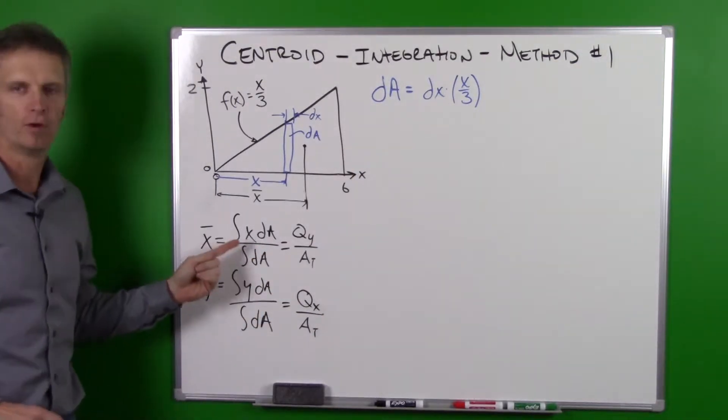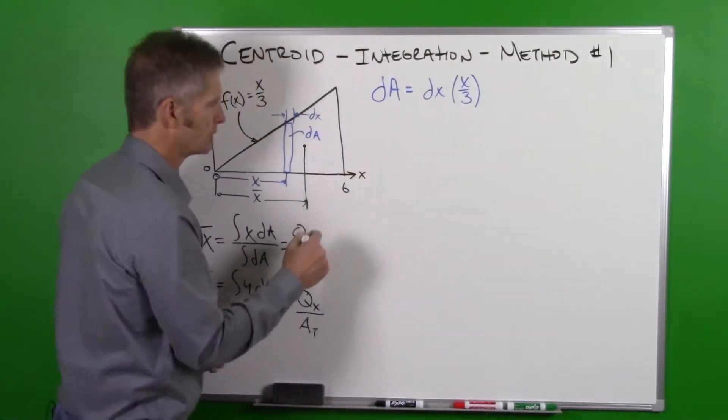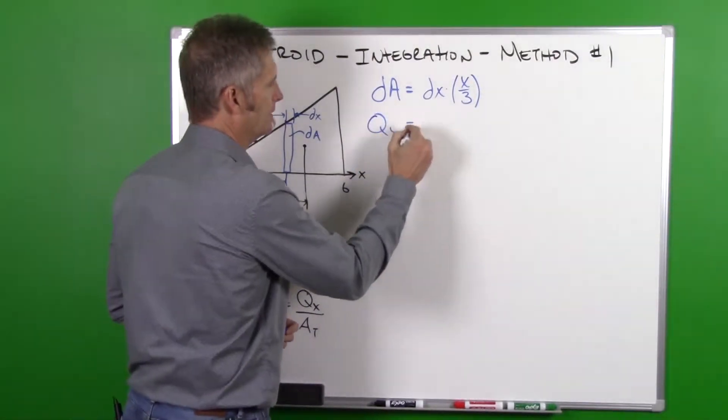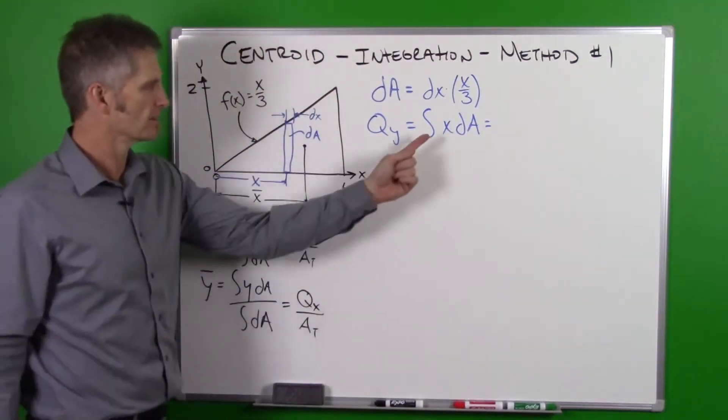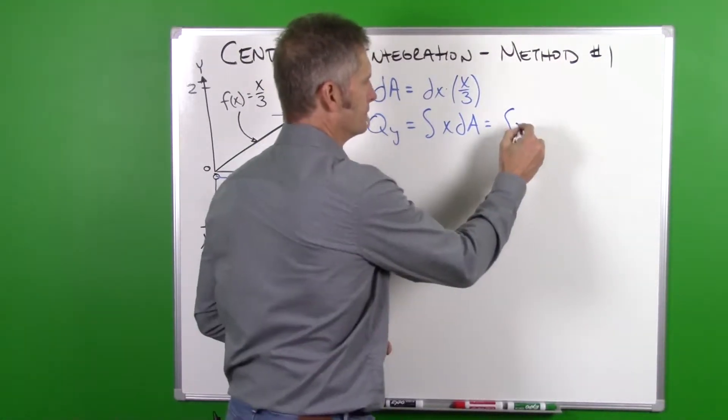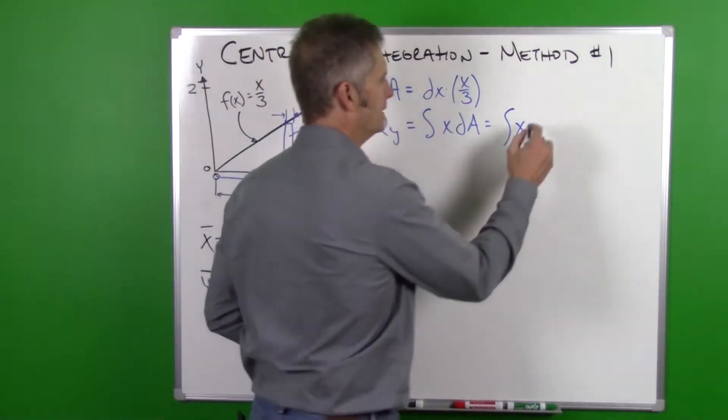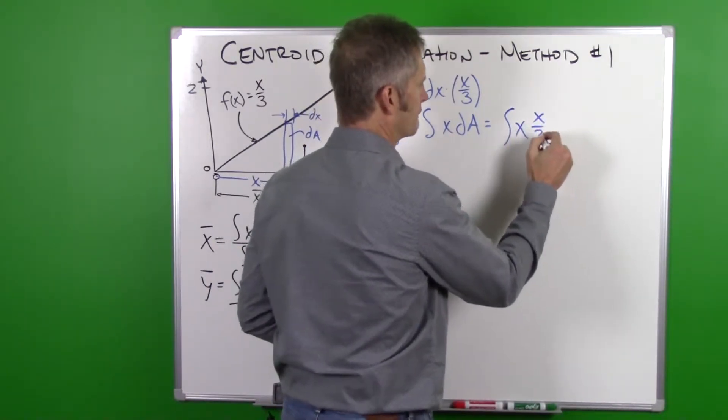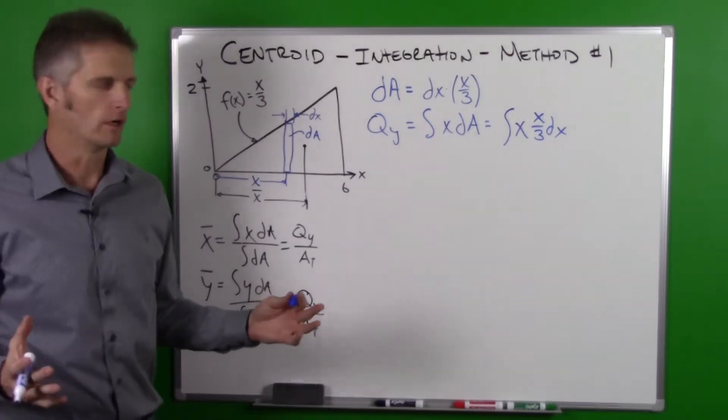So now we can go through and do our integrations. When we do the integral, this is our qy. So our qy is equal to the integral of x dA. Let's rewrite this: integral x and then our dA which is x over 3 dx. So now we have our equation.